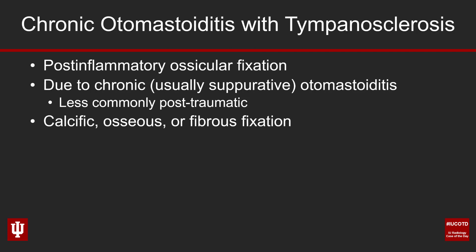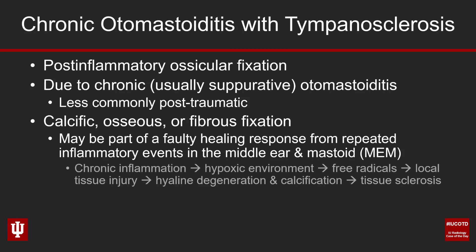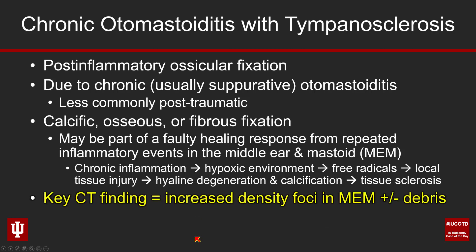Tympanosclerosis comes in three subtypes: it can be calcific, it can be true osseous with neo-osteogenesis, or it can be fibrous fixation, which is a little harder to see on imaging. The calcification is nicely visible on CT, but you can also see fibrous fixation where structures look thickened without quite the density seen in the calcific type. This is thought to be part of a faulty healing response from repeated inflammatory events in the middle ear and mastoid — chronic inflammation leads to a hypoxic environment, which causes free radicals, local tissue injury, hyaline degeneration, calcification, and eventual tissue sclerosis. The key CT finding is to look for increased density foci in the middle ear and mastoid, as well as possible inflammatory debris.